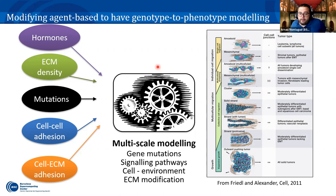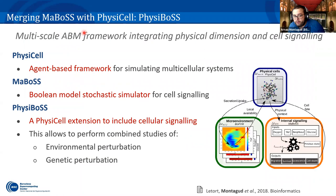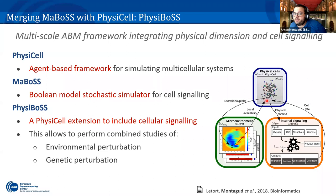The idea behind merging MaBoss with PhysiCell is exactly this. PhysiCell is the agent-based framework for simulating multicellular systems. MaBoss is a tool developed at Institut Curie that stochastically models Boolean networks. The idea was to introduce intracellular simulation inside the agents, and then the agents are affected by the environment. Quite cleverly, we took the first letters of 'Physi' and the last letters of 'Boss' to get PhysiBoss.